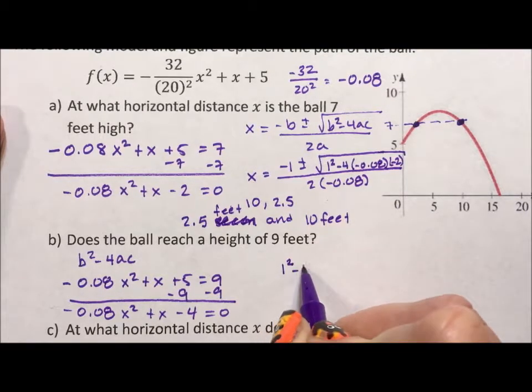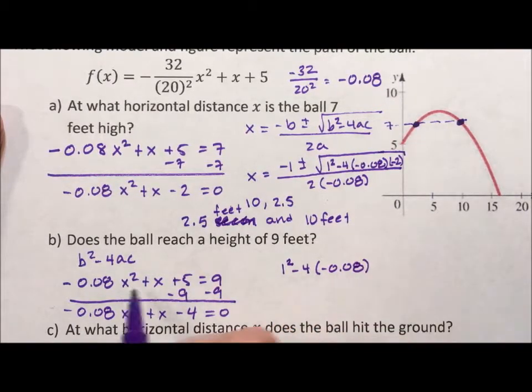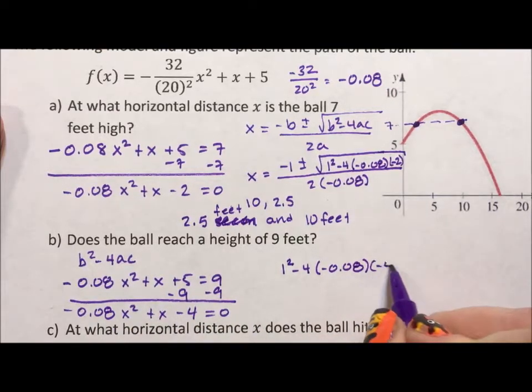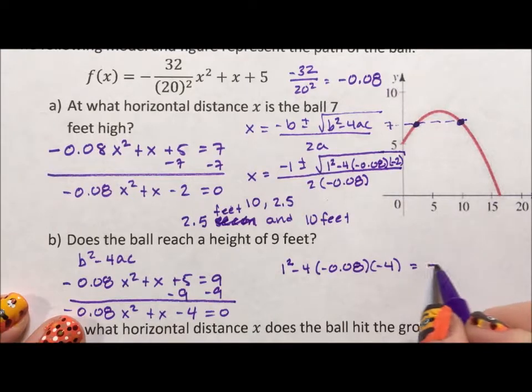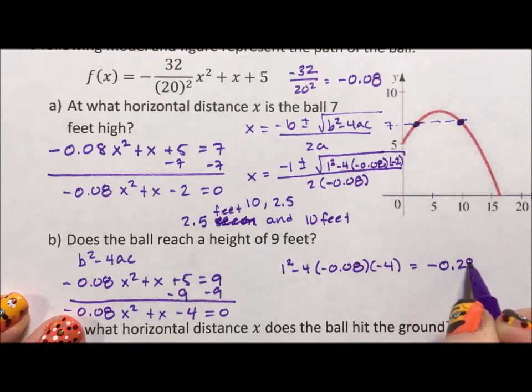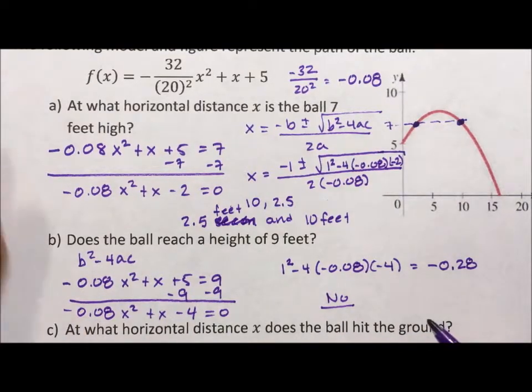I now test b squared minus 4ac. b squared is 1 squared minus 4 times negative 0.08. That's a, c is a negative 4. And if I throw that into my calculator, I get that that is equal to negative 0.28. It's negative, which means no, it will not reach a height of 9 feet.